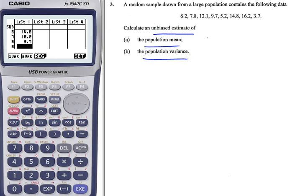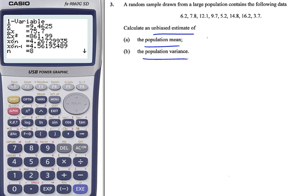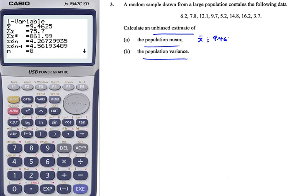We're dealing with a single variable here. Let's press F1. There's all the information we need. We have a value straight away, x bar equals 9.4625.